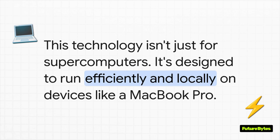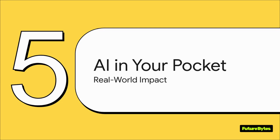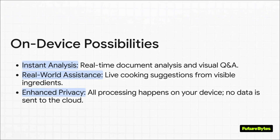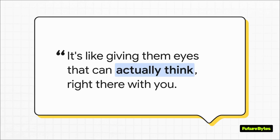This thing isn't some research experiment that needs a supercomputer — it's designed for the devices we all use every single day. So what does a massive leap like this in on-device AI vision actually mean for us? It unlocks a future where our AI assistants are instant, totally private, and always available. Imagine pointing your camera at some dense, boring report and getting an instant summary, or an AI that sees the ingredients on your counter and just suggests a recipe in real time. And because it all happens right there on your device, your data stays private — that's a huge deal. It's like giving our devices eyes that can actually think right there with you. This isn't just about faster processing; it's about changing the fundamental nature of what our devices can do for us, without the lag and without even needing an internet connection.